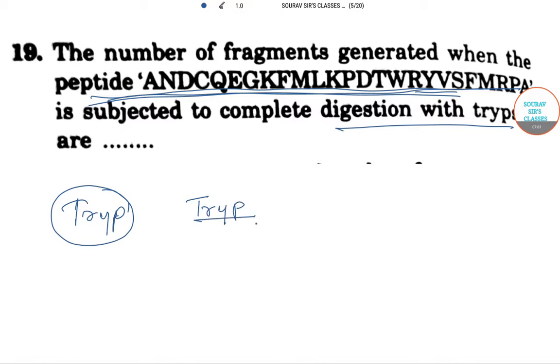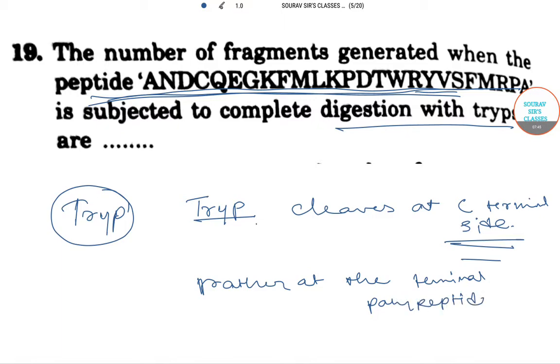Now first let me tell you what trypsin does. Trypsin only cleaves at the C-terminal side. So the C-terminal side, if they cleave on this portion, then the cleavage occurs within the polypeptide chain rather than at the terminal polypeptide chain. So if trypsin cleaves, it should be C-terminal side, that is carboxylic side.